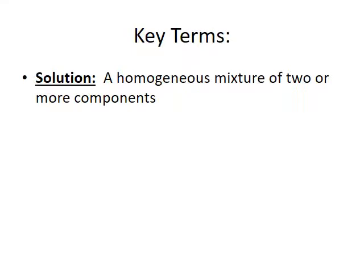It's important to start with a few key terms. A solution itself is considered a homogenous mixture of two or more components. Remember from the first semester of general chemistry that a homogenous mixture is one in which the components are mixed together completely on a particle level. The net result is that the solution looks like it is one substance instead of being a mixture of two or more different substances.